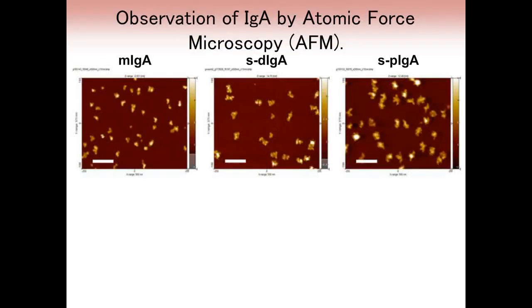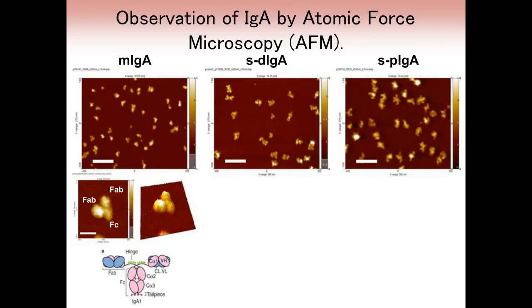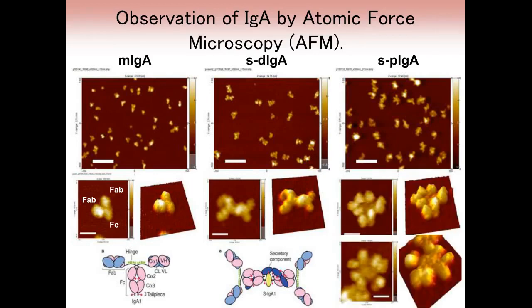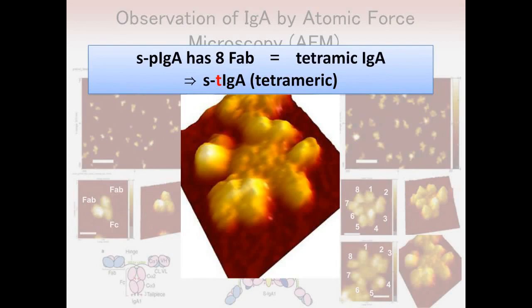To further characterize the structure of those antibodies, we observed those fractions by atomic force microscopy (AFM). The small fraction shows the existence of monomeric IgA, which has two FAB regions and one FC. The middle-sized fraction contains the dimeric form of secretory IgA, which has four arms and a secretory component in the middle. We also observed a larger form of IgA which has eight FAB arms — those fractions contain tetrameric IgA antibodies.